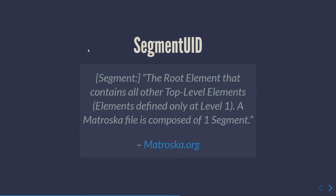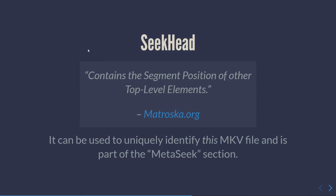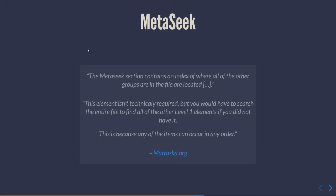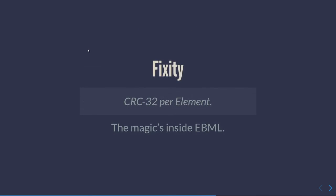By default each file has one segment identifier. Another element is a seek head — think of it like an index where a player can go and get information about what's in the file and where to find it. It's optional but speeds up seeking. Matroska also contains fixity — like the slice CRC in FFV1's bitstream — but at the container level.